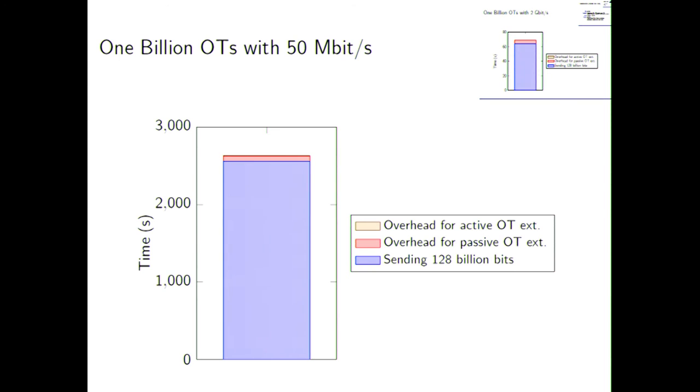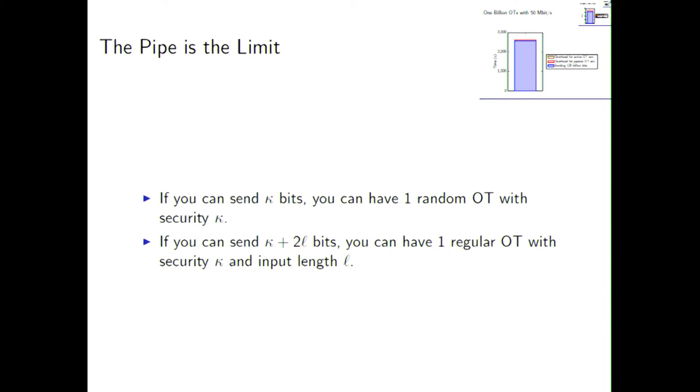Because that is just part of the passive OT extension that you have to have, that you have to send kappa times n bits. So if you want to have a billion OT with 128-bit security, you have to send 128 billion bits, and this takes just over a minute. And then there's a small overhead for the computation. So to stick with the theme of this session, you could say this is like a latte macchiato. You have a lot of milk, and a shot of espresso, and then the overhead for the active OT is the sugar. It's not very much in terms of volume, but it significantly changes the flavor of your drink. Going on to 1 billion OTs over, let's say, wide area network, where you only have 50 megabits per second, here it becomes even clearer. By far, the dominating component is simply your communication. And the overhead for doing the computation for the OT extension just becomes negligible. And this brings me to my last slide. So the take home message here is for OT extension, the pipe is the limit. If you can send kappa bits, you can have one random OT with security kappa. And on top of that, if you want to have standard or regular OT for length L, you have to send 2L bits, essentially just send those bits and do some XOR. So if you can send kappa plus 2L bits, you can have one regular OT with security kappa and input length L. And this concludes my talk, thank you.